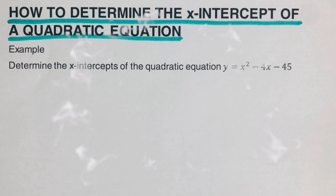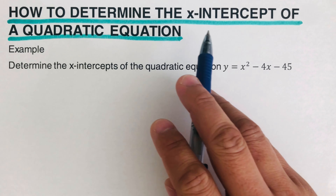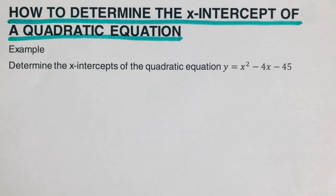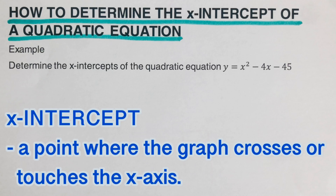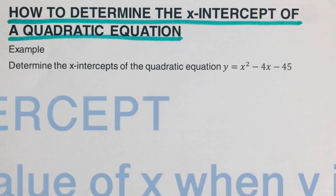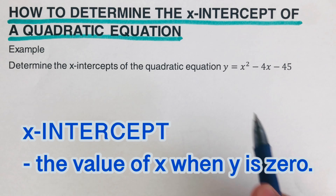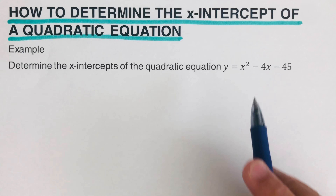Hello everyone. In this video we're going to determine the x-intercepts of a quadratic equation. By definition, an x-intercept is a point where the graph crosses or touches the x-axis — or pretty much, an x-intercept is the value of x when y is zero.